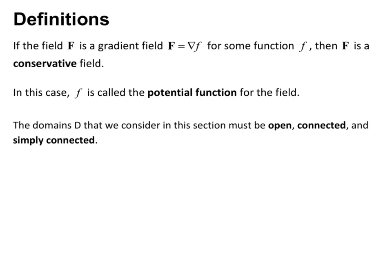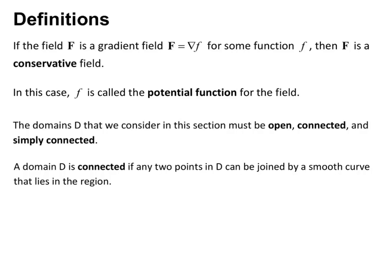The domain D that we consider in this section must be open, connected, and simply connected. Open we discussed in Unit 3. A domain is connected if any two points in D can be joined by a smooth curve that lies in the region — in other words, to join two points within the domain, you do not have to exit the domain. Think of connected as in one piece.